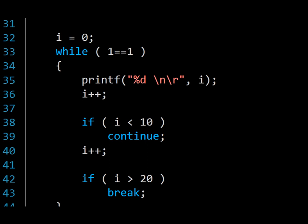I mentioned before that my first code project was an online game. This is an example of where an infinite loop is pretty much required. Since the game should always be available for new players to connect, the execution takes place in a giant infinite loop. To achieve this, you simply create a while statement with a condition that is always true, such as 1 equals 1. Notice however the use of two keywords: continue and break.